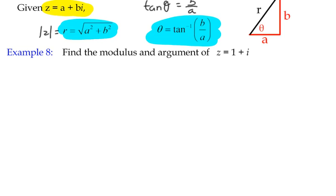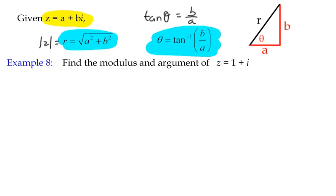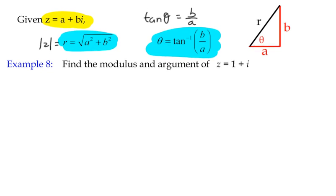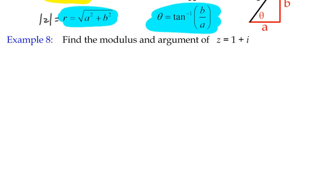There's one last thing to bear in mind when we're trying to find our angle, and I'll take you through this in this example. Find the modulus and argument of Z equals 1 plus i. The first thing that you should do is draw a little sketch of the Cartesian version of it. So we've got real and imaginary axes, and if Z is 1 plus i, that's 1 on the real axis and plus 1 on the imaginary axis, and that is my complex number Z.